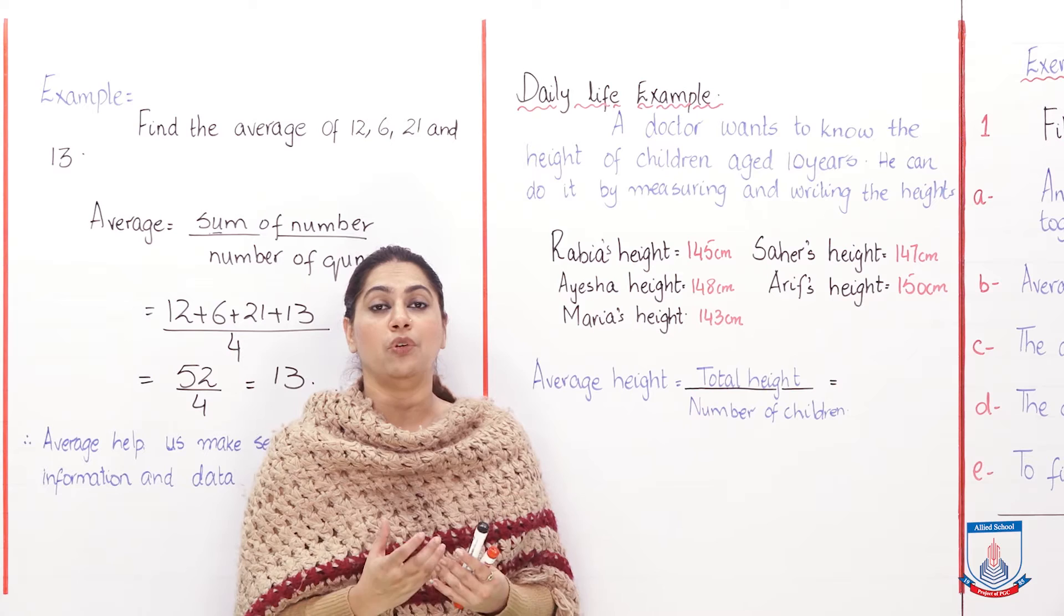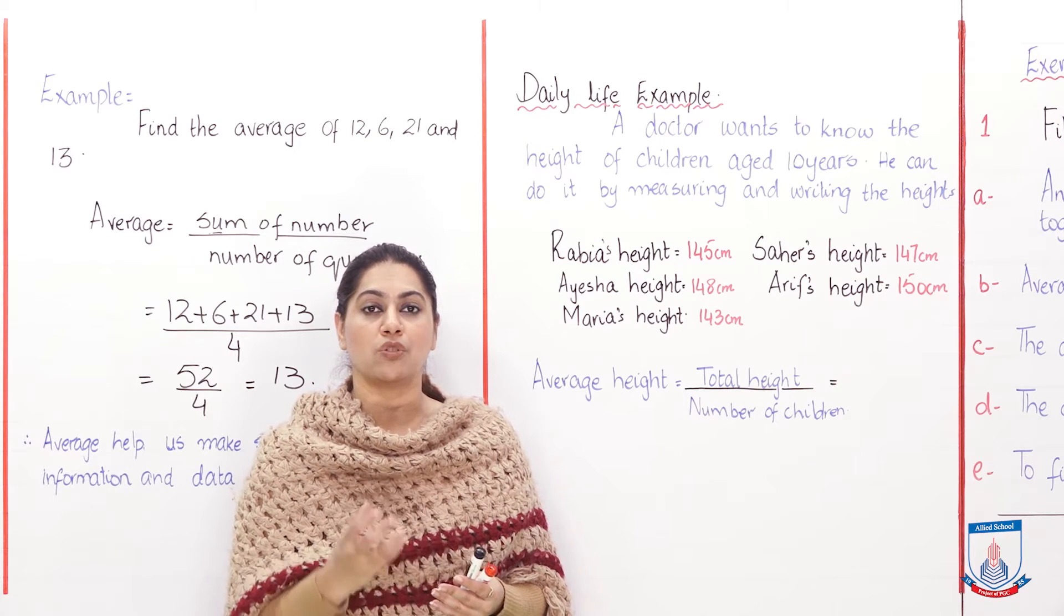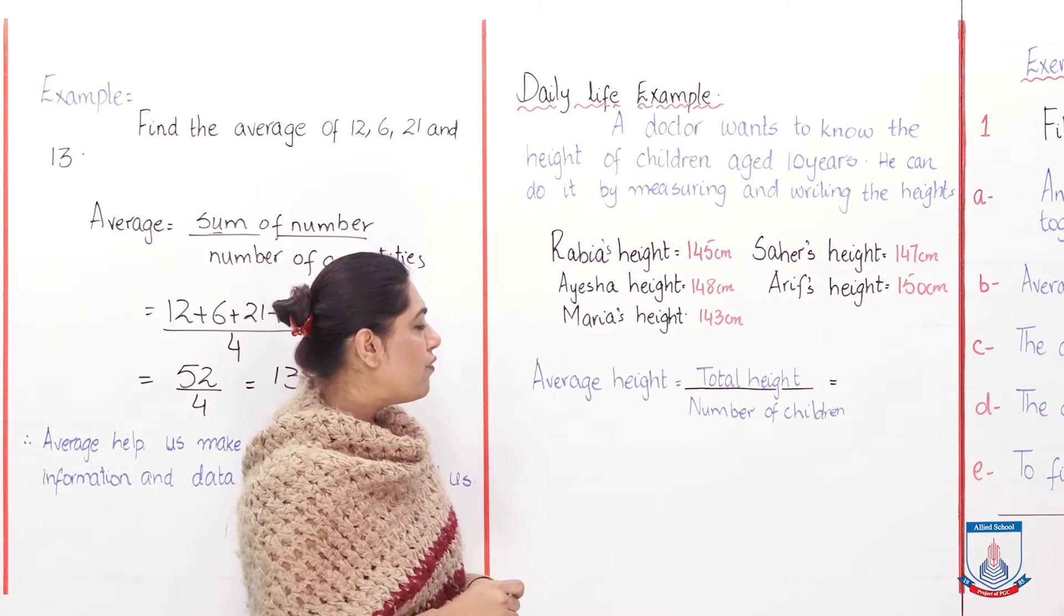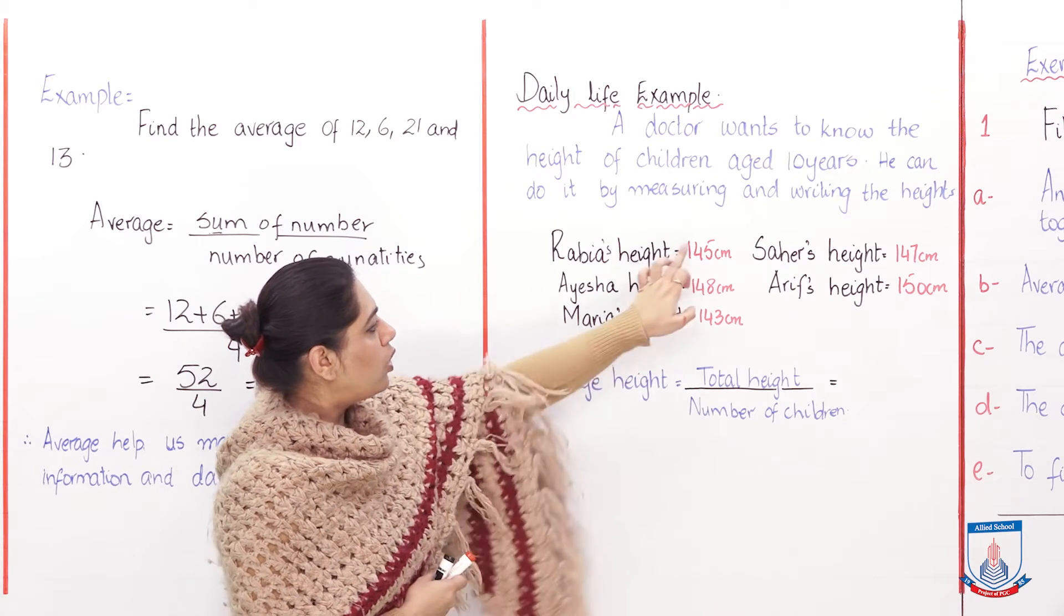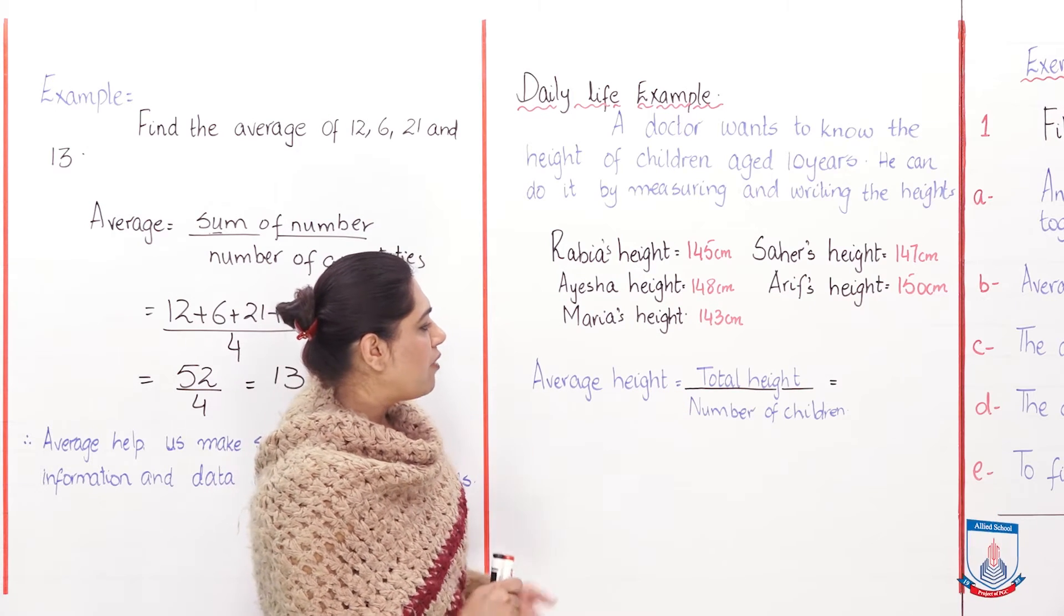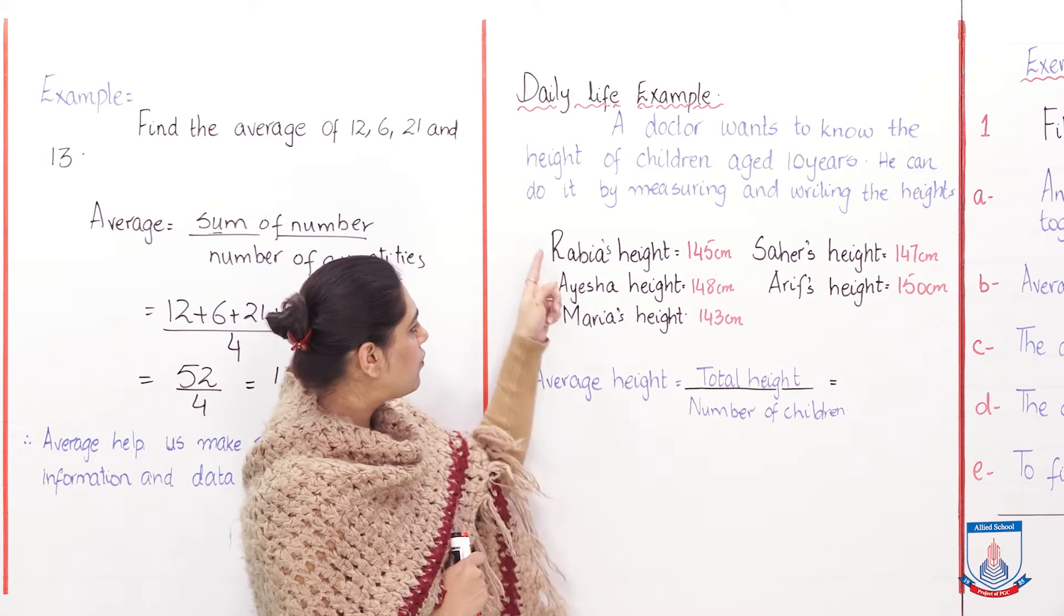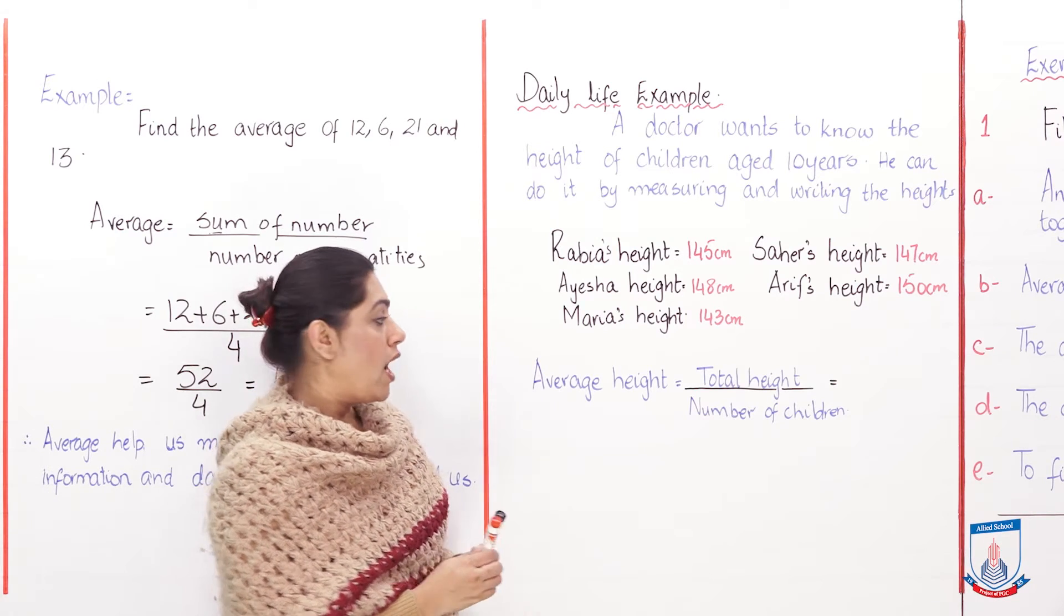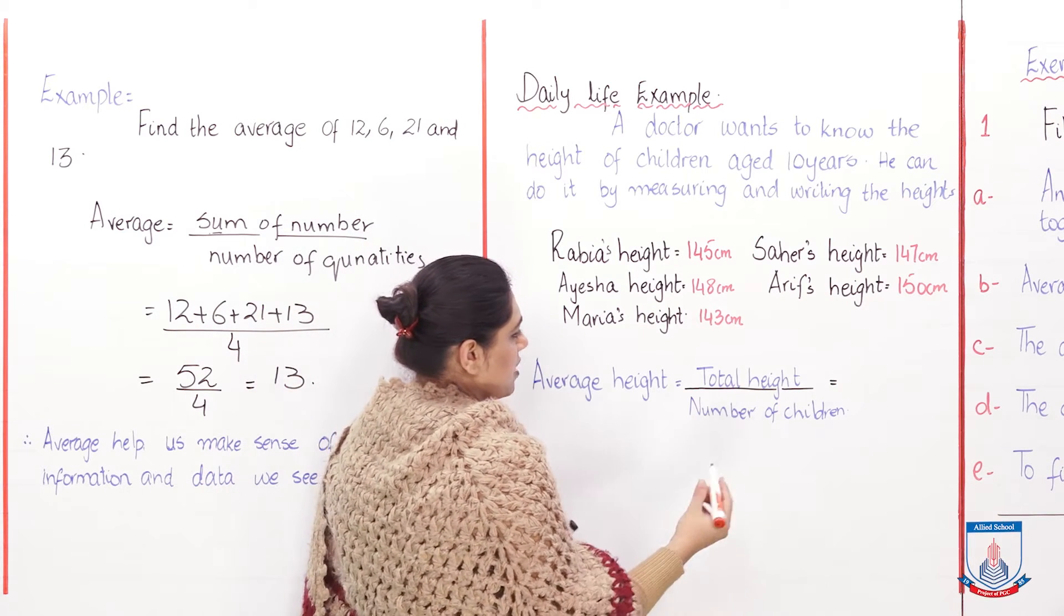So what is he going to do? He is going to find out the average. He is going to find out the average of their height. So what will he do for average? He is going to total all the heights, then divide by the number of children. How many children's data has he collected? There are 5. So now he will add all these, and his answer will be 733.